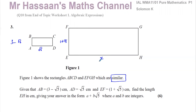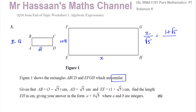It says find the length of EH, which I'm going to call x, giving your answer in the form a plus b root 5 where a and b are integers. Since the rectangles are similar, the ratio of the widths is the same as the ratio of the lengths. So EH divided by AD equals the width of the bigger rectangle divided by the width of the smaller one: (1 + √5) divided by (3 − √5).